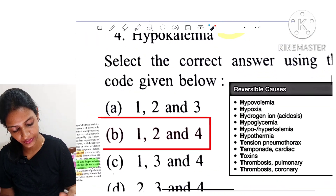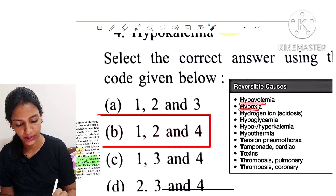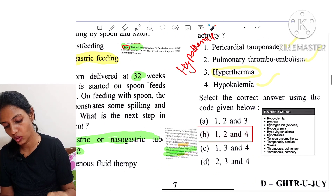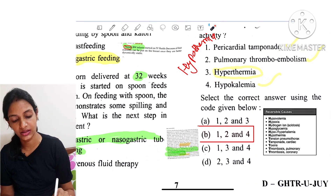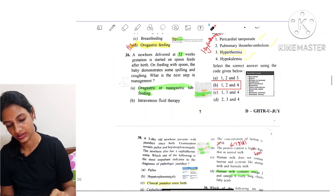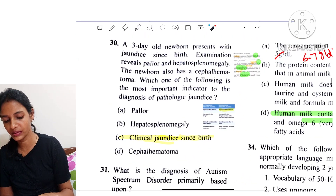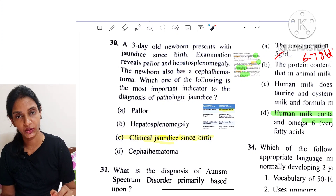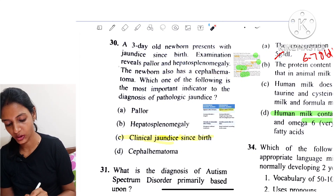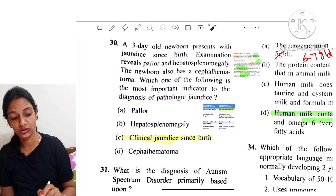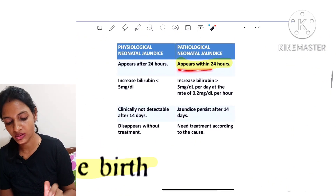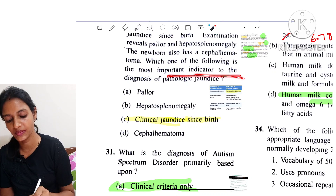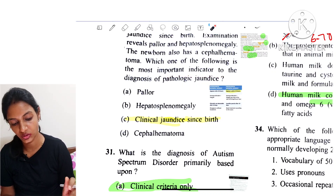Question 29: Which are the reversible causes of electromechanical dissociation (pulseless electrical activity)? The reversible causes are all 'hypo': hypovolemia, hypoxia, hydrogen ion (acidosis), hypoglycemia, hypokalemia, and hypothermia. Any 'hyper' statement is wrong. So options 1, 2, and 4 are true. Question 30: A 3-day-old newborn presents with jaundice since birth, pallor, hepatosplenomegaly, and cephalohematoma. The most important indicator of pathologic jaundice is clinical jaundice appearing within the first 24 hours of life.